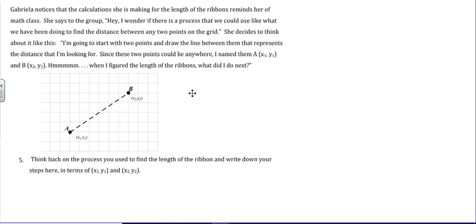So Gabriella notices that the calculation she's making for the length of the ribbon reminds her of math class. She says to the group, Hey, I wonder if there's a process that we could use, like what we've been doing to find the distance between any two points on the grid. She decides to think about it like this. I'm going to start with two points and draw the line between them that represents the distance that I'm looking for. Since these two points could be anywhere, I named them A, (x₁, y₁), and B, (x₂, y₂).